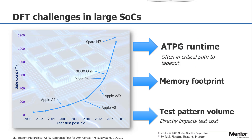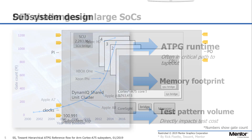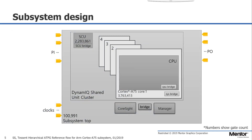Without true hierarchical DFT, both the coverage and the runtime for any large design can delay the design cycle significantly. The subsystem in this flow, which contains multiple Cortex A75 cores, is a decent-sized design. The schematic on the screen shows the abstract view of the subsystem design. There are four Cortex A75 cores inside the cluster.